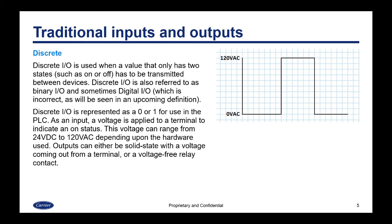Discrete I/O is used when a value that only has two states — such as on or off — has to be transmitted between devices. Discrete I/O is also referred to as binary I/O or sometimes digital I/O, which is actually an incorrect way to describe it. Discrete I/O is represented as a zero or one for use in the PLC. As an input, a voltage is applied to a terminal to indicate an on status. This voltage can range from 24 volts DC to 120 or even 230 volts DC depending on the hardware used. Outputs can either be solid state with a voltage coming out from a terminal, or a voltage-free relay contact.